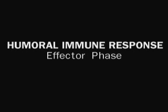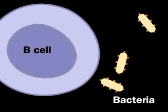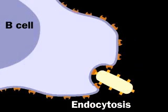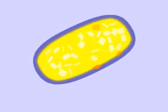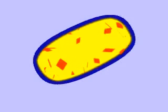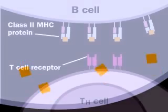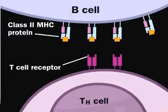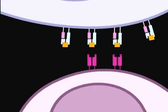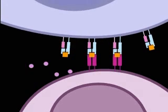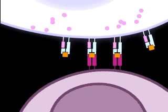In the effector phase of the humoral immune response, activated helper T cells help B cells develop into antibody-producing plasma cells. A B cell which has encountered the same antigen as was recognized by the original helper T cell processes the antigen, and class II MHC proteins transport the pieces for display on the B cell surface. Thus, the B cell becomes an antigen-presenting cell. If an activated helper T cell has the same specificity as the B cell, it can dock with the B cell and assist it by releasing cytokines.